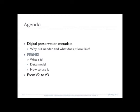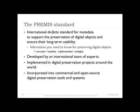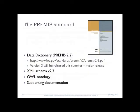What is PREMIS? What is its data model and how do we use it? PREMIS is the international de facto standard for metadata to support the preservation of digital objects and to ensure their long-term usability. It defines the core metadata you need for digital preservation. It is about ten years old, was developed by an international team of experts, is implemented in digital preservation projects around the world, and is incorporated into commercial and open source digital preservation tools and systems.